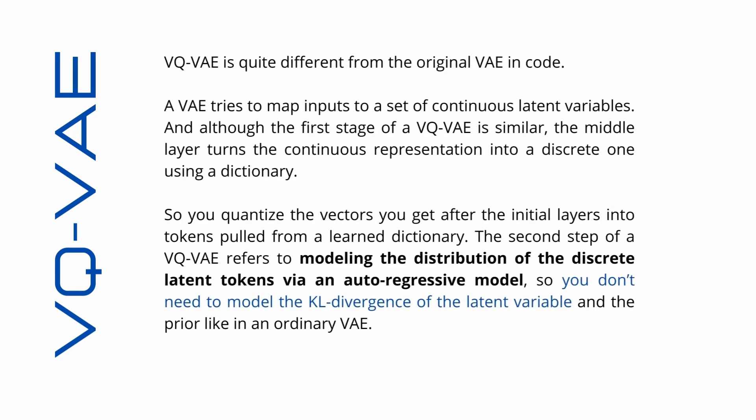When you code it, it's quite different from the original variational autoencoder. Instead of continuous latent variables you have discrete ones. The second step refers to modeling the distribution of the discrete latent tokens via an autoregressive model — so you don't need to model the KLD of the latent variable at a prior, like in the ordinary variational autoencoder.